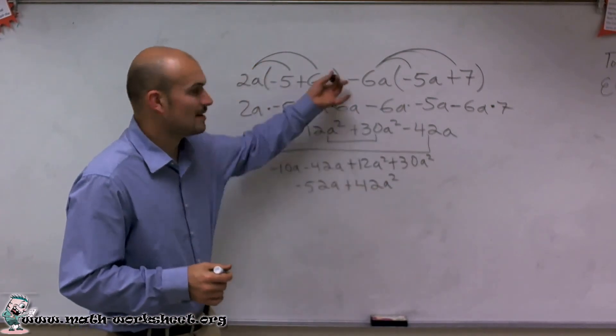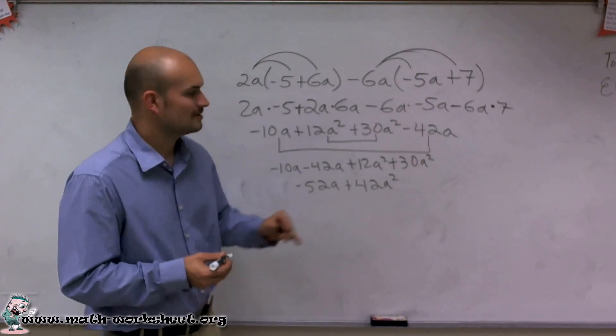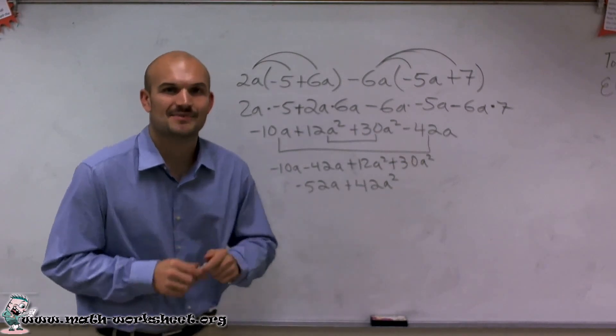So there you go. I've simplified this expression down to 42a squared minus 52a. Thanks so much.